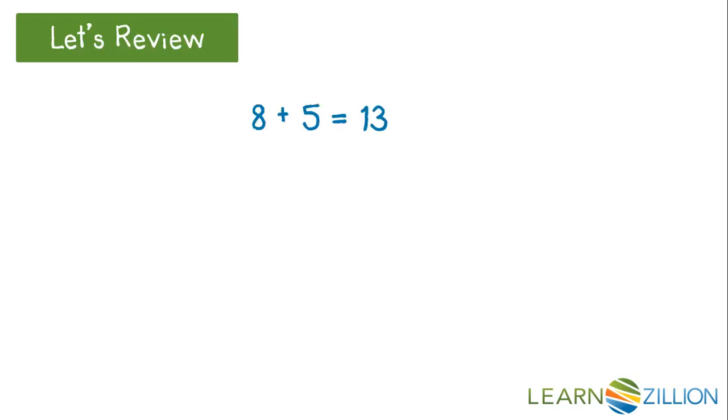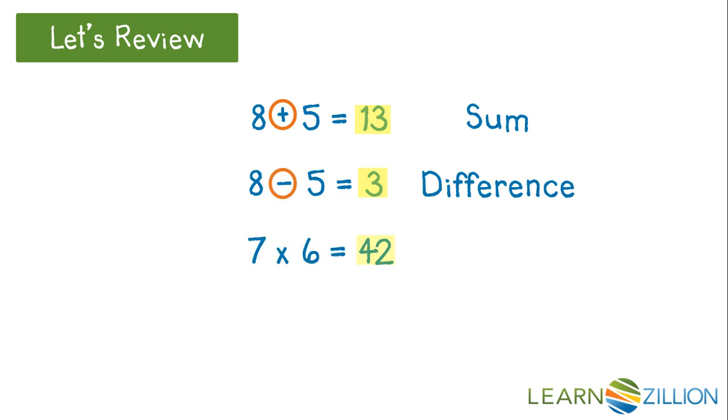Let's review. Every number in an equation has a name. The answer to an addition equation is called the sum. Subtraction, difference. Answer to a multiplication equation is called the product. And to a division equation is called the quotient.